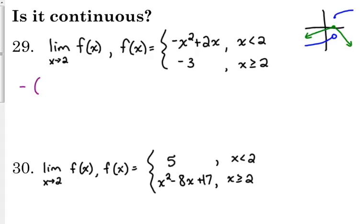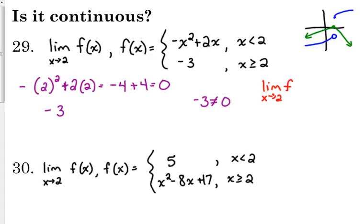We've got that negative is in front of that, we apply it after the squared. So that gives us negative 4 plus 4, which is equal to 0. The second piece is always negative 3.